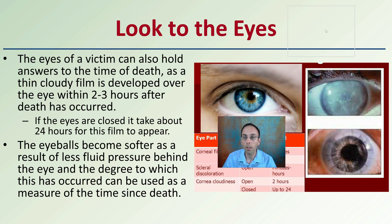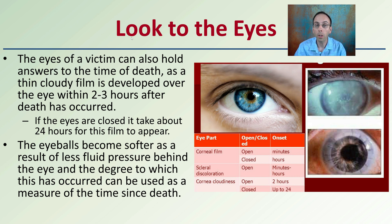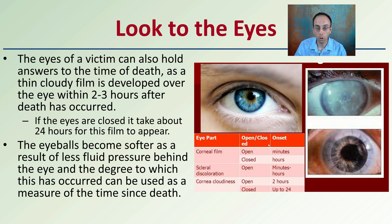Looking at the eyes is another indicator, because the eyes of the victim can also hold answers to the time of death. A thin cloudy film will develop over the eye within about two to three hours after death. If the eyes are closed, this will take about 24 hours for the film to appear. The eyeballs also become softer as a result of less fluid pressure behind the eye, and the degree to which this has occurred can be used as a measure of time since death. There is a chart here looking at open versus closed eyes and the onset, to give an approximation for estimating time of death.